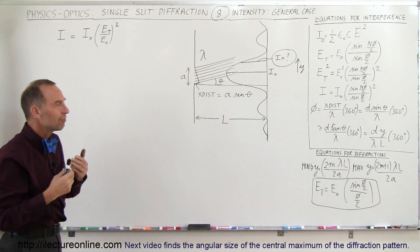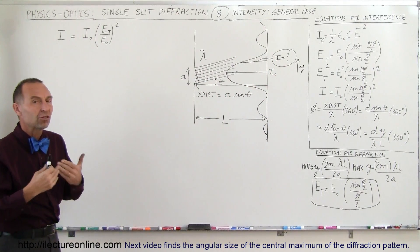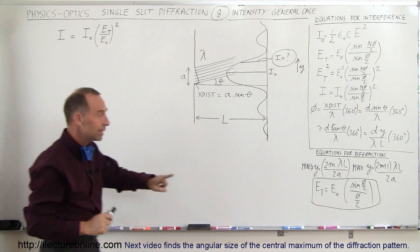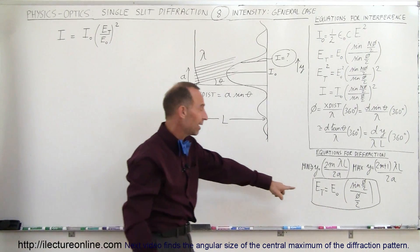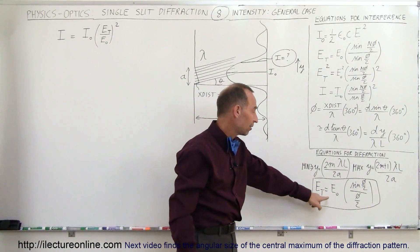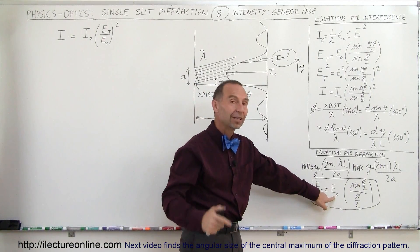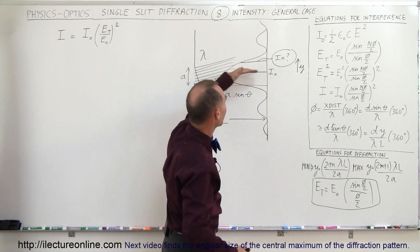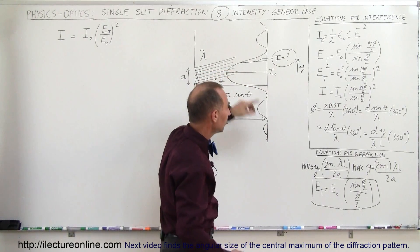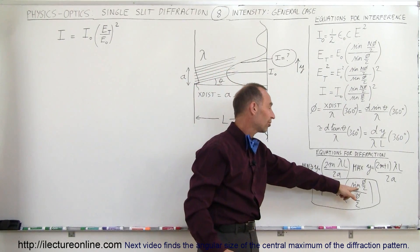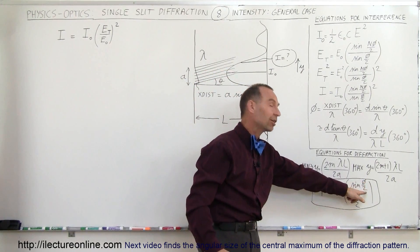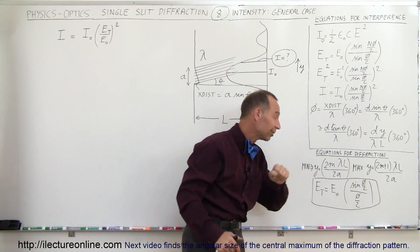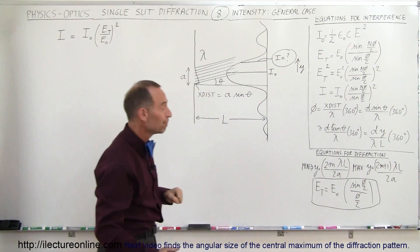For that, we need to find an equation that describes it in general. We already know the electric field intensity as a function of the electric field intensity at the very central maximum, times the ratio of the sine of the phase angle divided by 2, divided by the phase angle divided by 2.